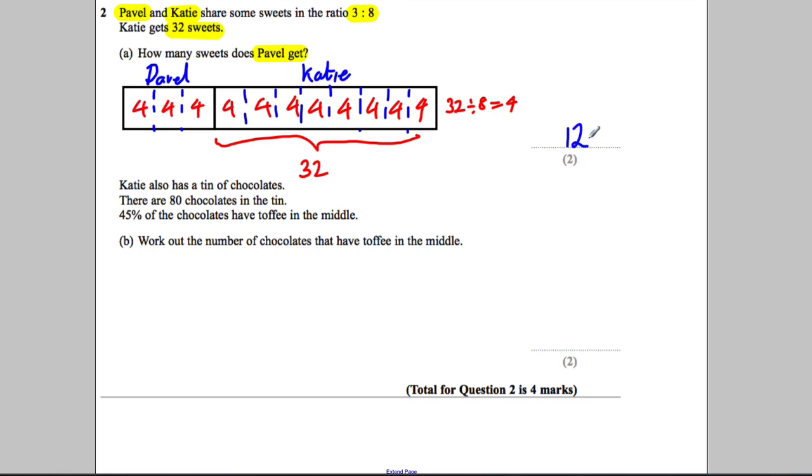Katie also has a tin of chocolates. There are 80 chocolates in the tin. 45% of the chocolates have toffee in the middle. Work out the number of chocolates that have toffee in the middle.